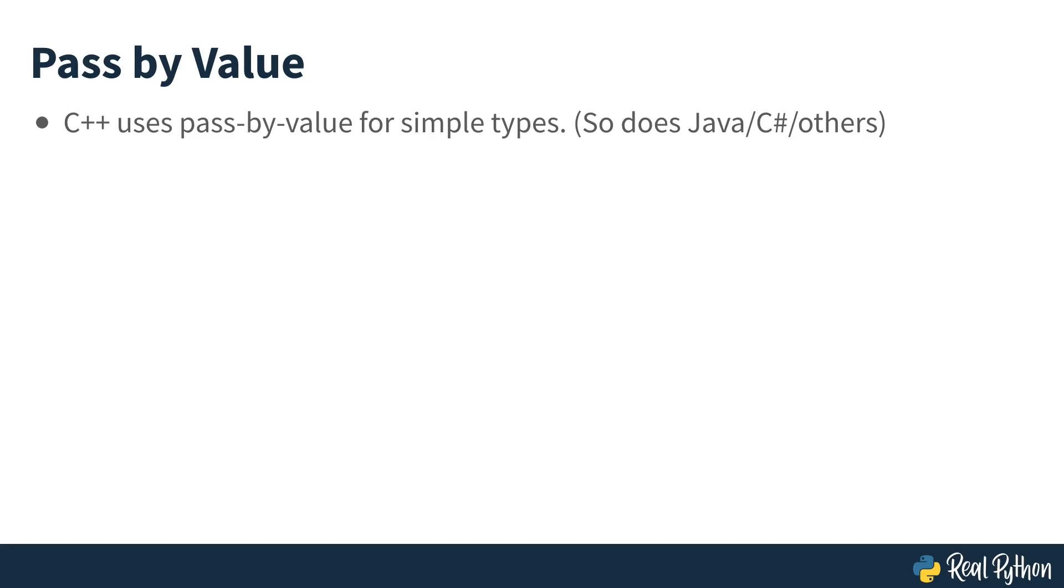C++ uses something called pass-by-value for simple types. I can demonstrate that with a very simplified model of memory. When the main function is run, a specific place in memory is designated to hold the value of the variable val, which has a value of 4. When the function is called, a new place of memory is made to hold the value of num. And then the value of 4 is copied from val to that memory location. That's what we mean by pass-by-value. The value is copied from the argument to the parameter. When the function finishes running, the memory for num is removed, but the memory location for val remains until the program itself quits running.